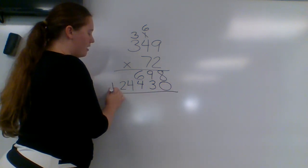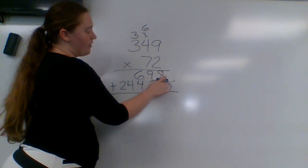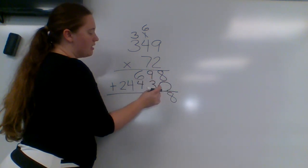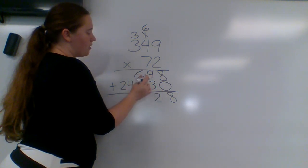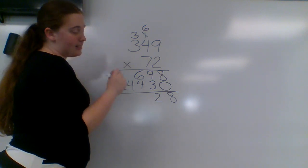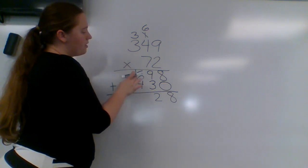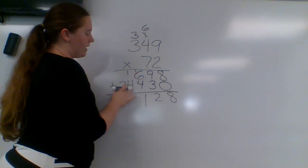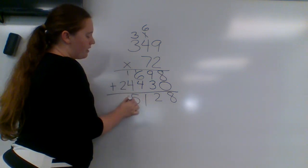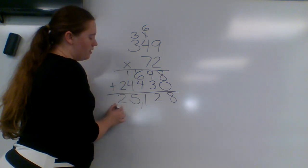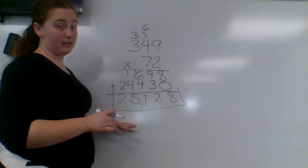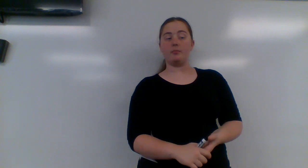Draw a line underneath and add it together. I have 8 plus 0 is 8. 9 plus 3 is 12. I need to carry my 1. So I have 6 plus 4 is 10. Plus the 1 is 11. And carry the 1 again. And 4 plus 1 is 5. And 2 plus nothing is 2. So my answer is 25,128.